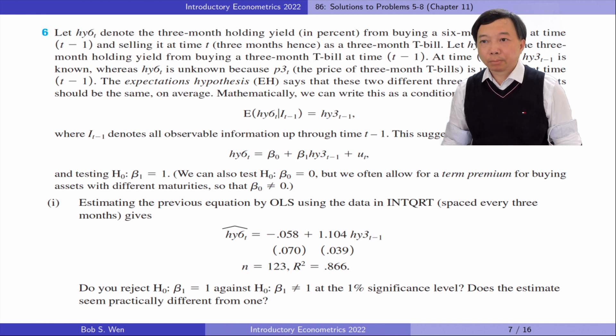Let's do problem 6. Let hy6_t denote the 3-month holding yield from buying a 6-month t-bill at time t-1 and selling it at time t as a 3-month t-bill. Let hy3_{t-1} be the 3-month holding yield from buying a 3-month t-bill at time t-1. At time t-1, hy3_{t-1} is known, whereas hy6_t is unknown because the price of 3-month t-bills is unknown at time t-1. The expectations hypothesis says that these two different 3-month investments should be the same.